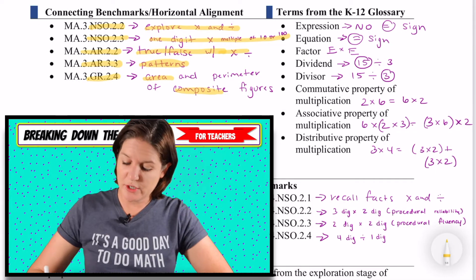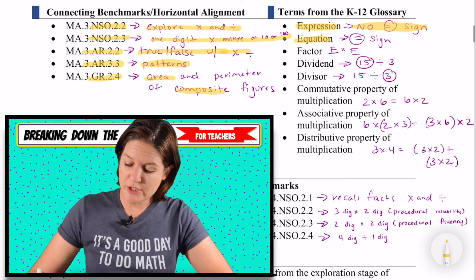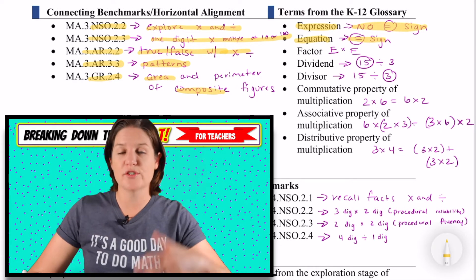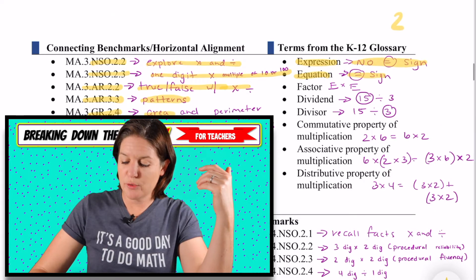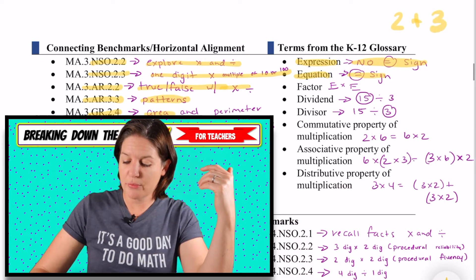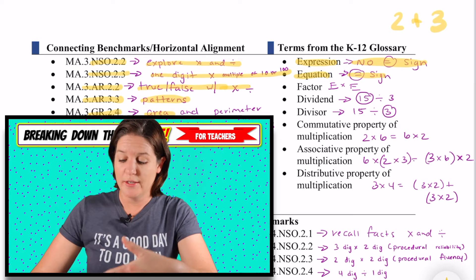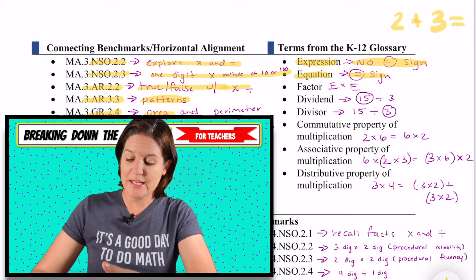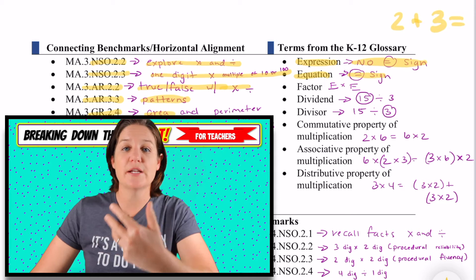Let's go over some of these terms. Expression means no equal sign. Equation means that there is an equal sign present. So expression means like if you had two plus three, there is no equation — it's an expression, but as soon as we throw that equal sign there, it becomes an equation.